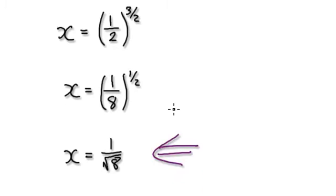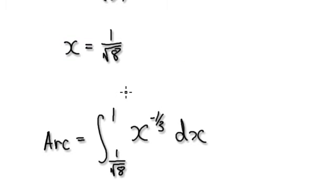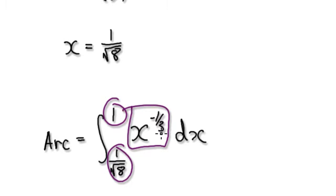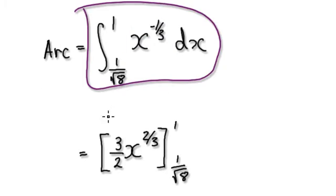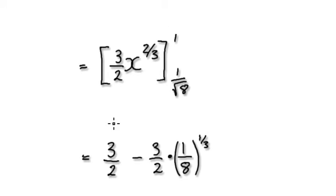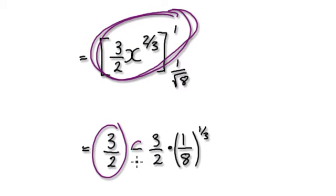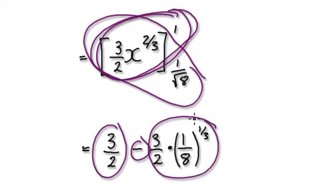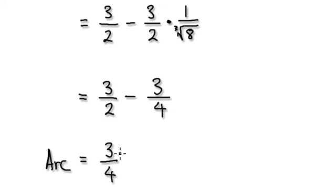So we are currently here. The arc we're interested in, we're doing it from 1 over root 8 to 1 of this expression. So now we just need to integrate this. Integrating this from here to here gives you this expression. And then it will be this take away this. So that arc there is 3 over 4.